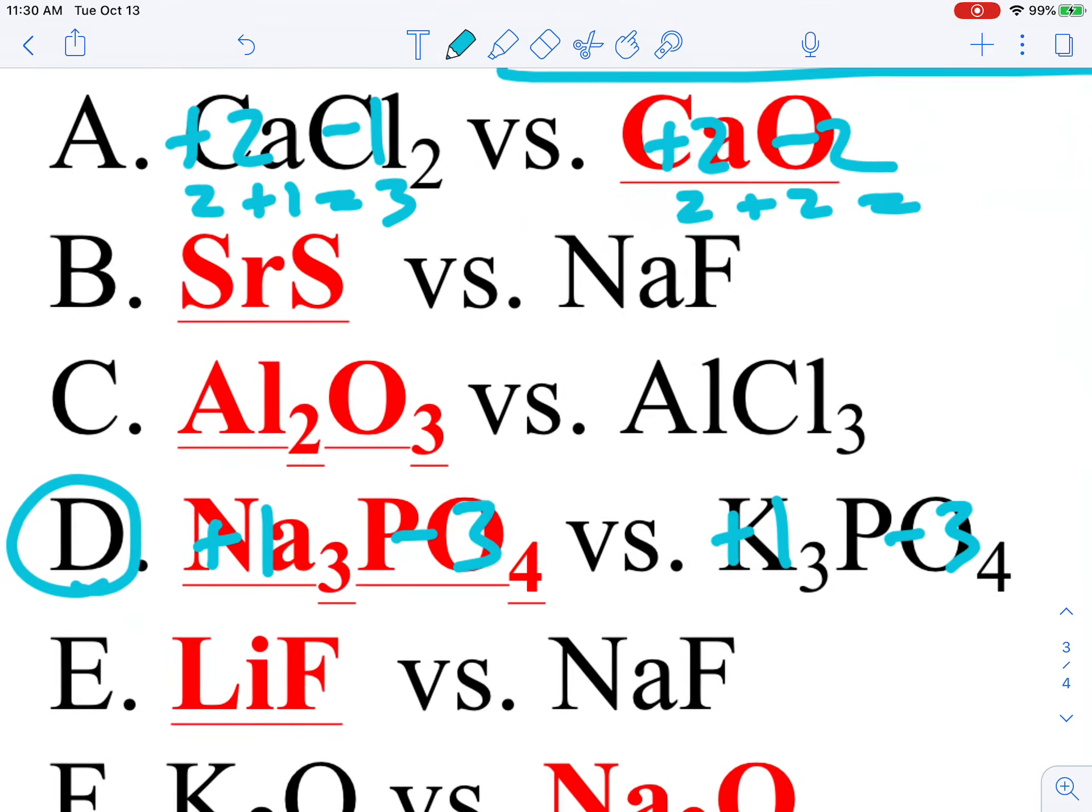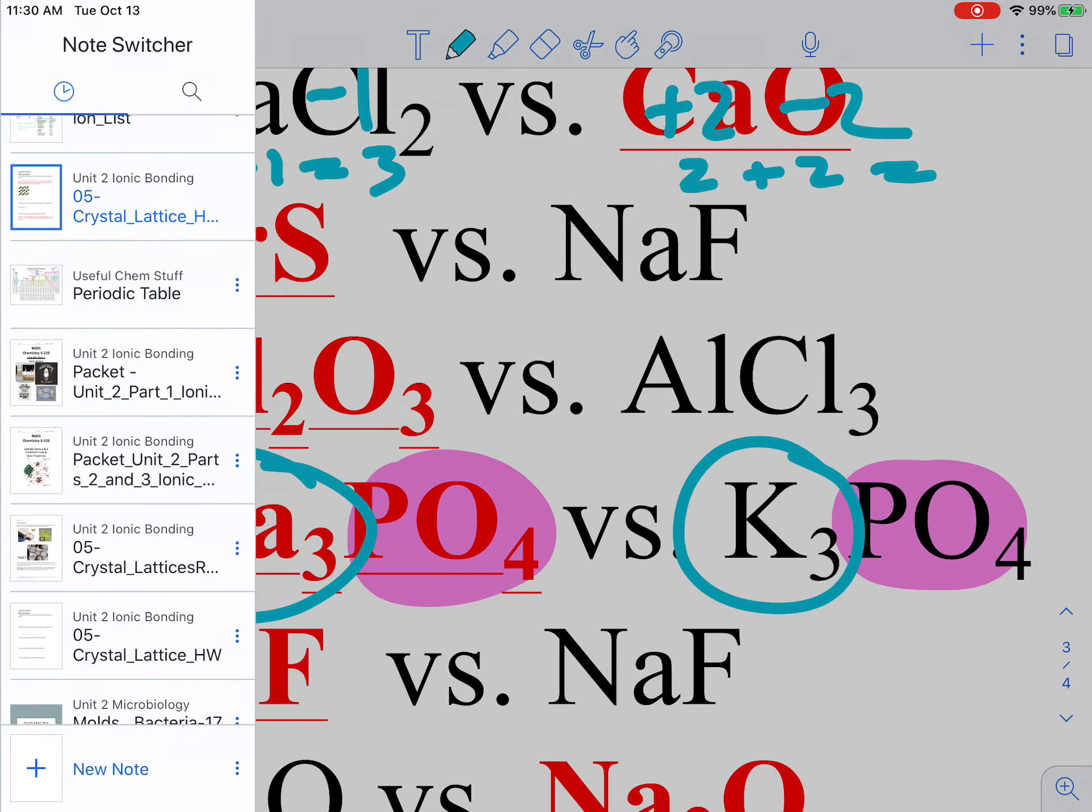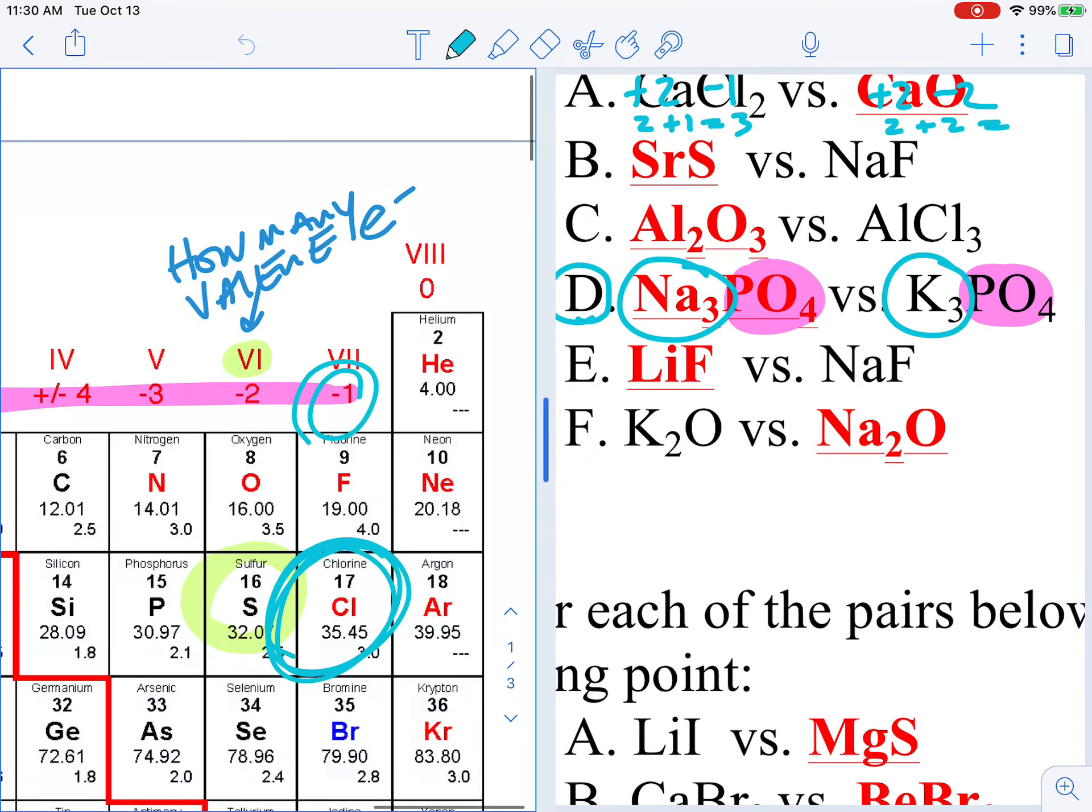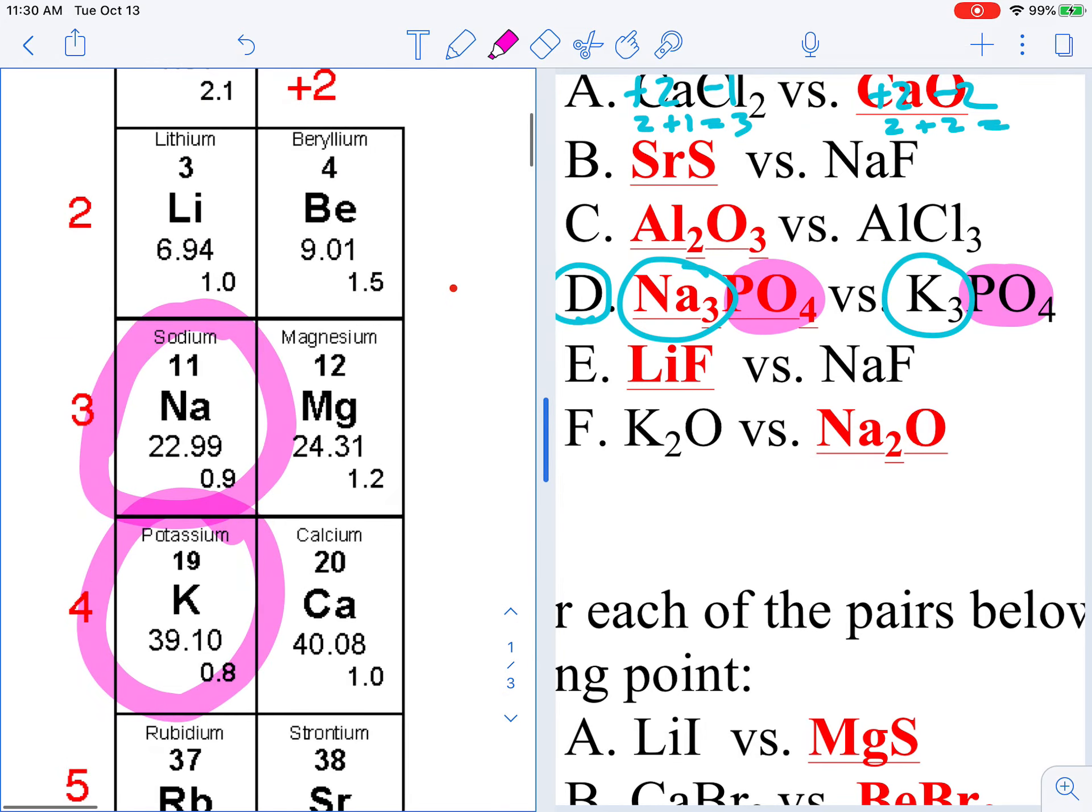If I go back and look at these two, let's erase this. They both have PO4. But now I have to find Na and K on the periodic table. Well, let's do that. Here's Na. Here's K. Alright. Let's keep that in mind. Na is above K.